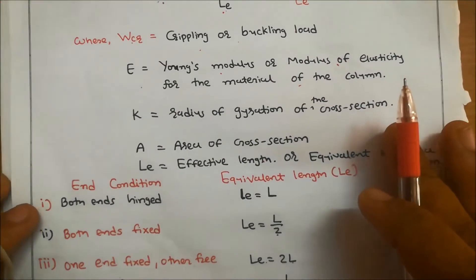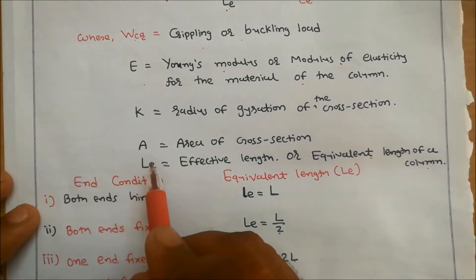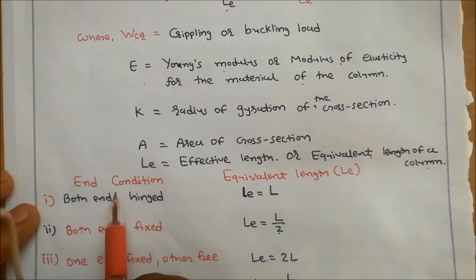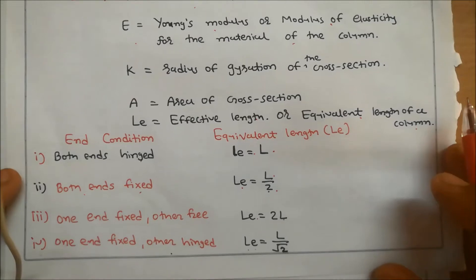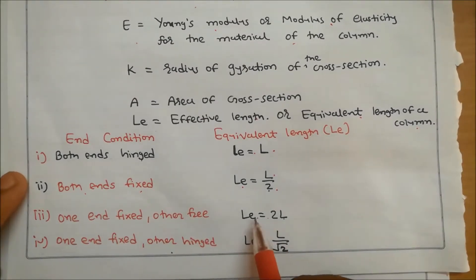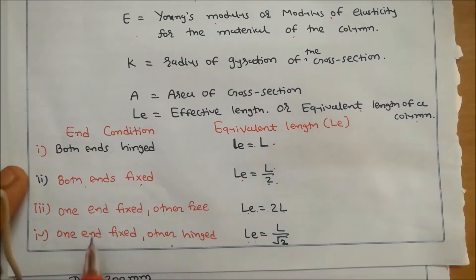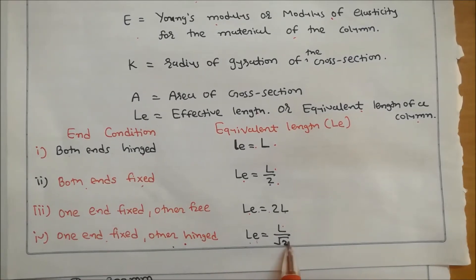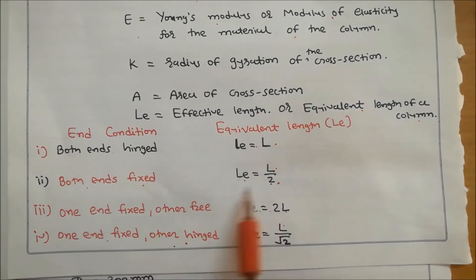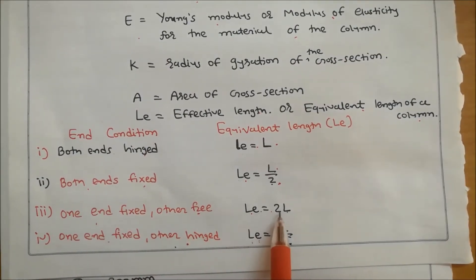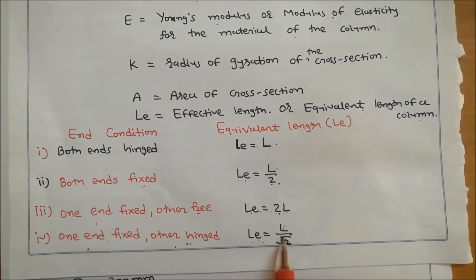We find Le using the end condition of the column. If both ends are hinged, Le = L. If both ends are fixed, Le = L/2. If one end is fixed and the other is free, Le = 2L. If one end is fixed and the other end is hinged, Le = L/√2.